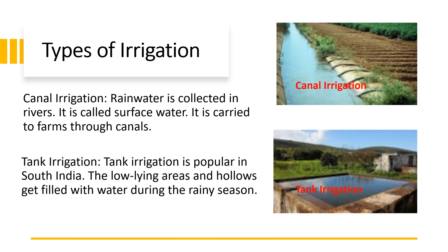Rainwater which goes under the ground is groundwater, and it is accessed by digging wells. Tank irrigation is popular in South India. The low-lying areas and hollows get filled with water during the rainy season, and the water collected in this manner is used during the dry season — this is called tank irrigation.